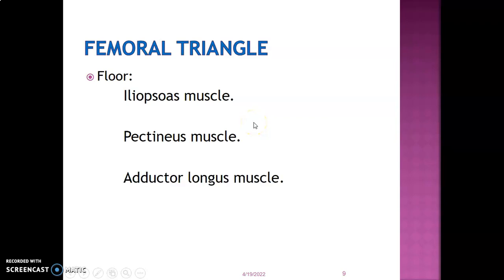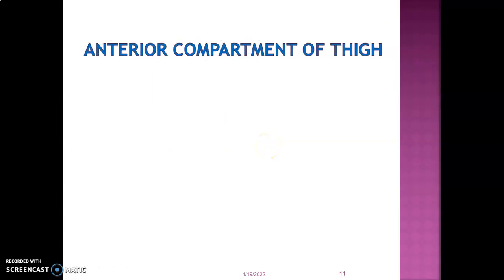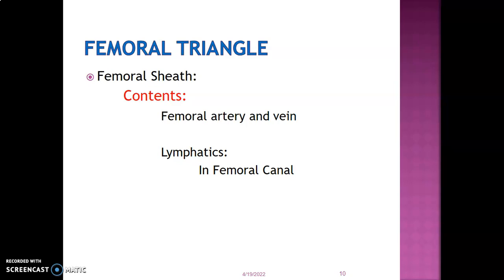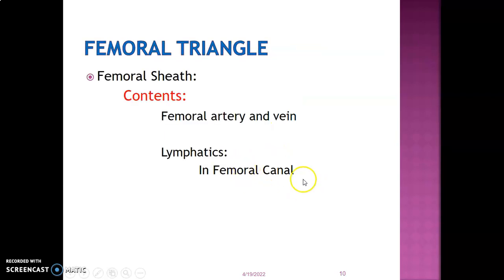The floor of the femoral triangle is formed by iliopsoas, pectineus, and adductor longus muscles. The femoral sheath is formed anteriorly by the transversalis fascia and posteriorly by the fascia iliaca. The femoral sheath is divided into three compartments: the lateral compartment has the femoral artery, the intermediate compartment has the femoral vein, and the most medial compartment has deep lymph nodes — the Cloquet lymph nodes — within the femoral canal. These deep lymph nodes drain the clitoris in females and the glans penis in males.